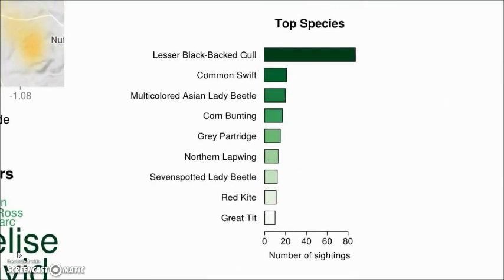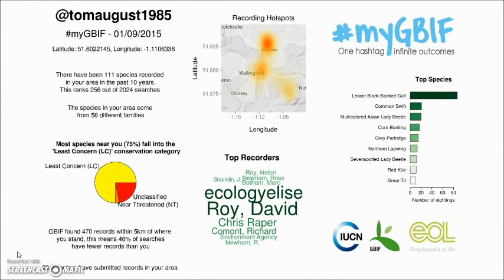We also get this ranked list of species — the top 10 species recorded in my area, with the most commonly recorded at the top. On the x-axis you can see how many times they've been sighted. The lesser black-backed gull seems to have lots of records from my area. We've also got logos in the corners: the MyGBIF logo in the top right, and in the bottom right the IUCN, GBIF, and Encyclopedia of Life logos, because they all contribute data to this dataset.